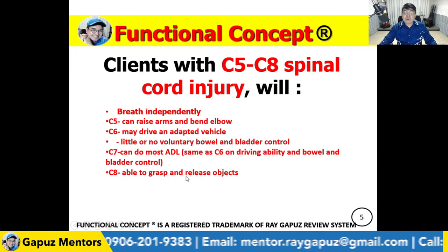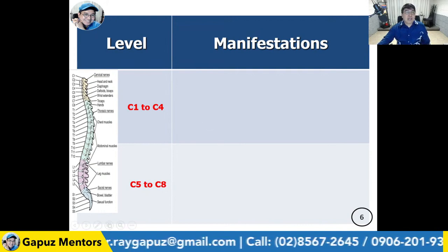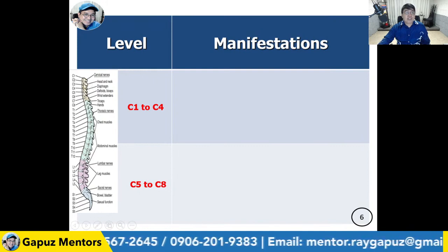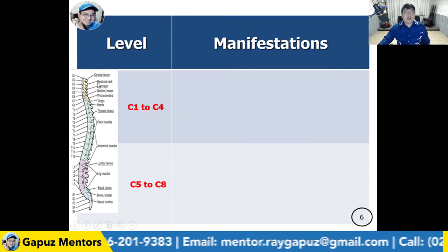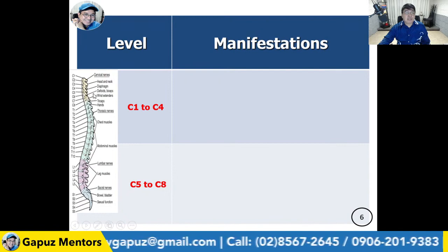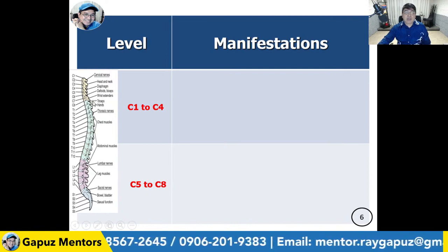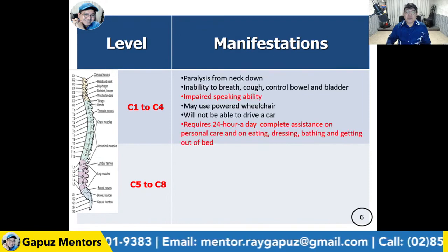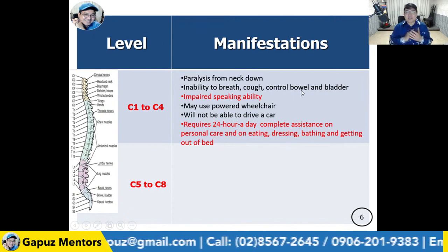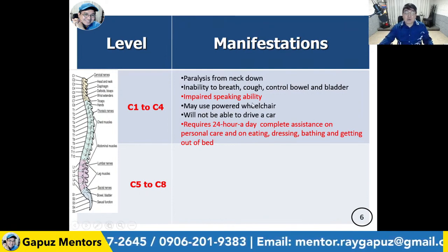To summarize: for a client with C1 to C4 cervical injury, looking at the illustration, the parts of the body affected include the head, neck, and diaphragm. For C5 to C8, the deltoids, biceps, wrist extensors, and triceps are affected. For C1 to C4 injury: paralysis from the neck down, inability to breathe, cough, or control bowel and bladder — the three B's: breathing, bowel, and bladder. There is also impaired speaking ability and dysphagia.